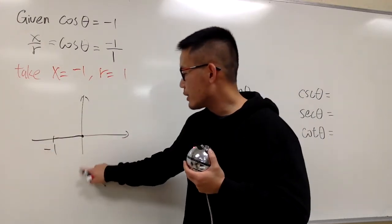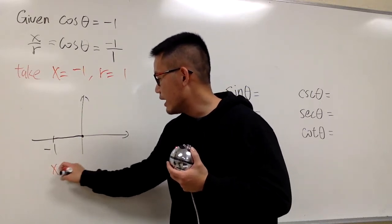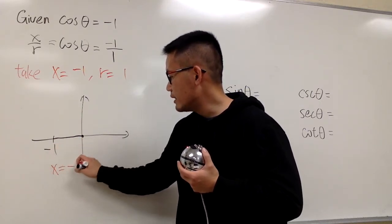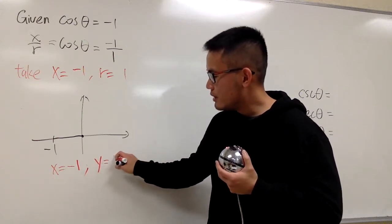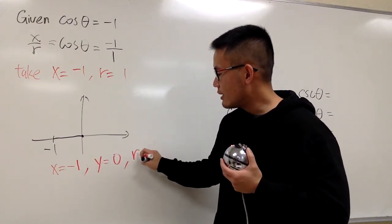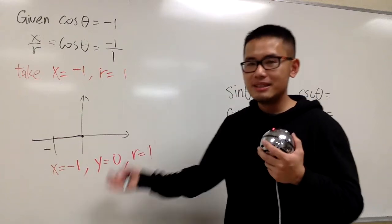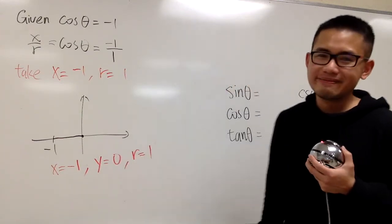But anyways, the deal right here is that you have to know, x is equal to negative 1, and the y has to be 0, and the r is 1. These are the values that we are going to use.